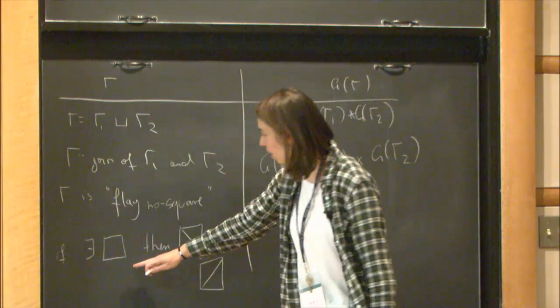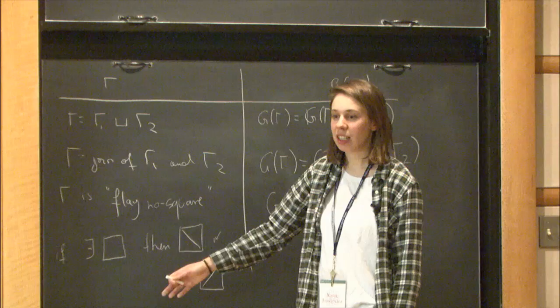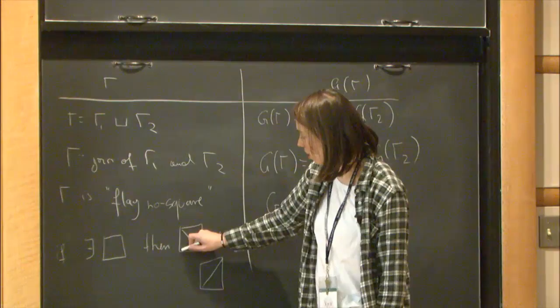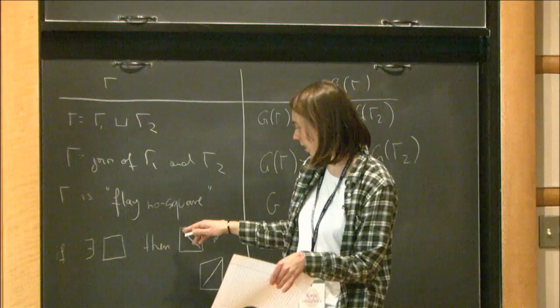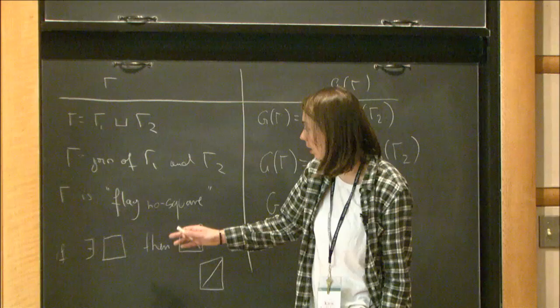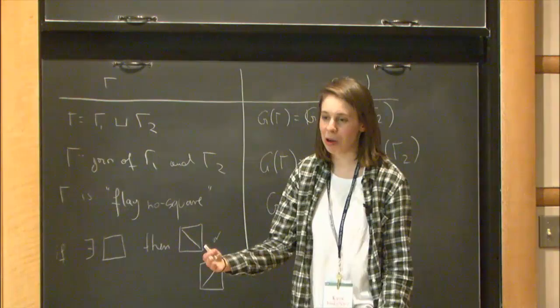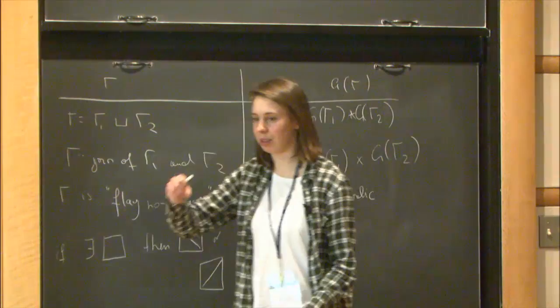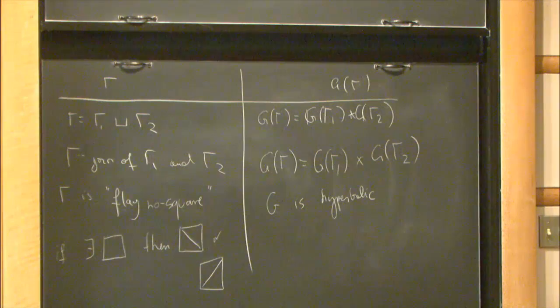Someone asks about the name 'flag.' A flag complex is what you get from a graph by adding all higher-dimensional simplices wherever you see the skeleton of a simplex — for example, adding triangles wherever there's a clique. 'Flag no square' means that in the flag complex of your graph, there are no essential squares.